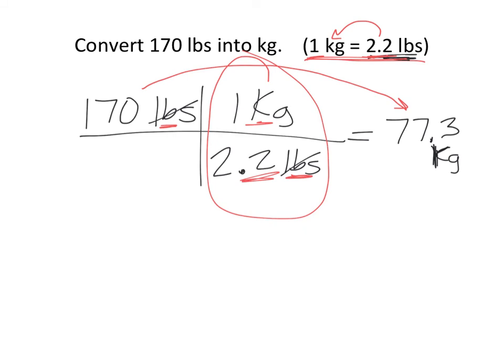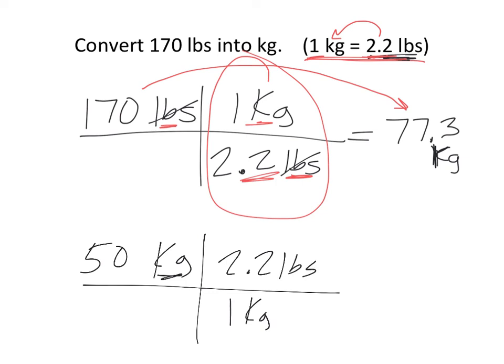Now, if I were doing the opposite, if I said I had 50 kilograms and I was converting that to pounds, then I'd say, I'm in kilograms here. I need to put 1 kilogram on the bottom and 2.2 pounds on the top, in which case I do 50 times 2.2 divided by 1. When I do that, I believe I get 110 pounds.